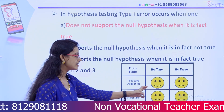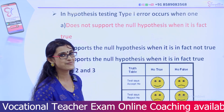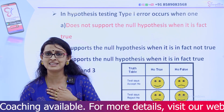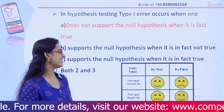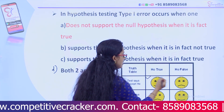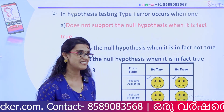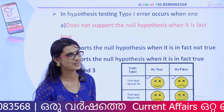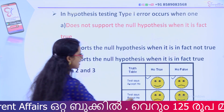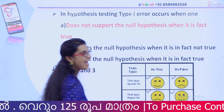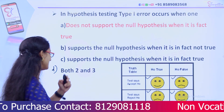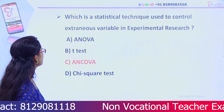If we formulate the null hypothesis and conduct a study, but we reject H0 even though H0 is correct, that is a Type 1 error. If we accept a false null hypothesis, that is a Type 2 error.